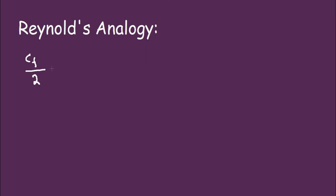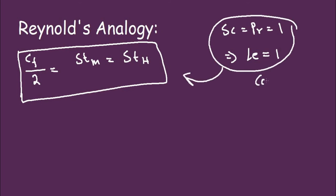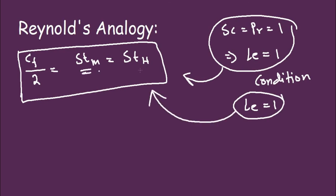The Reynolds analogy states that Cf/2 equals Stanton number for mass equals Stanton number for heat. This holds when Schmidt number equals Prandtl number equals 1, which implies the Lewis number equals 1. So when Lewis number equals 1, the Stanton number for mass equals Stanton number for heat equals friction factor divided by 2. This is the Reynolds analogy.